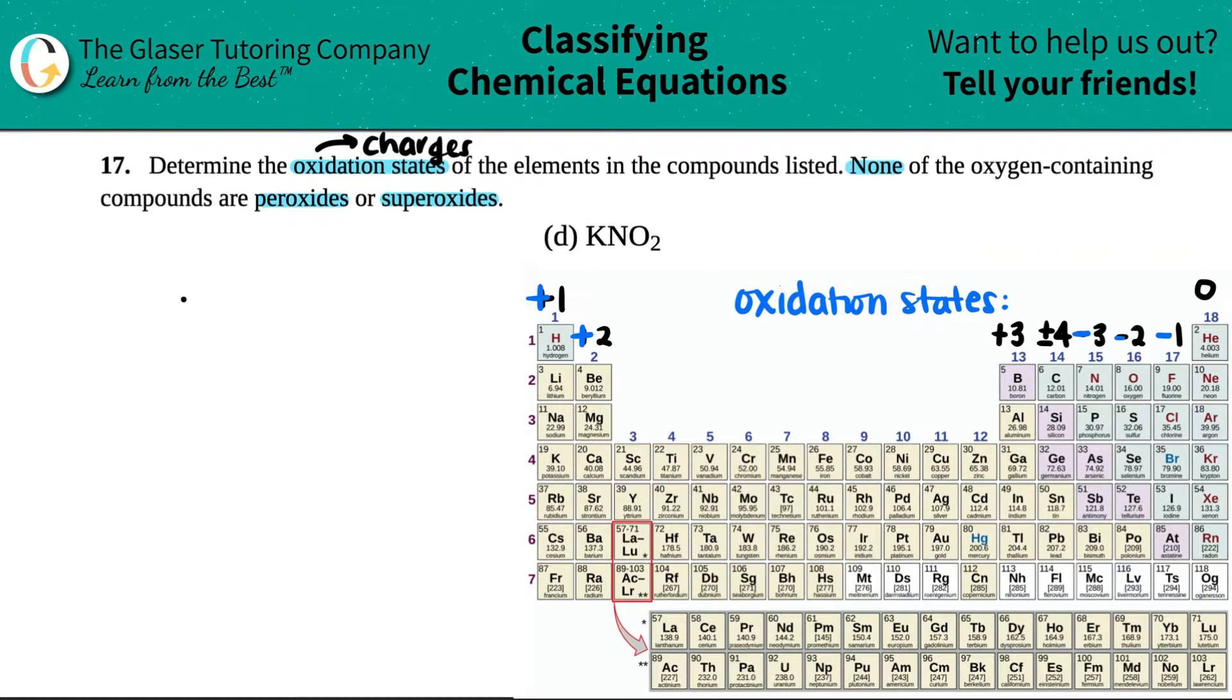We need to find out the oxidation states for KNO2. Now this one is a very special case because there are three different elements here. Usually when there's three or more elements, we're going to solve the oxidation states using algebra. You don't have to do it this way, but I find that it's the easiest way. And the key, the majority of the time, is that you probably will know all of the elements on the outside what their charges are.